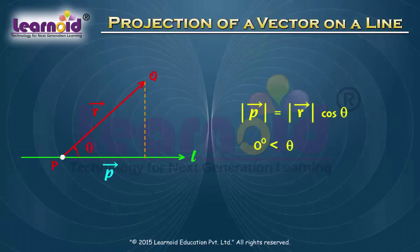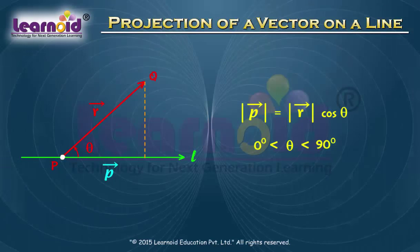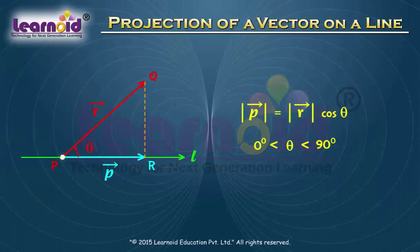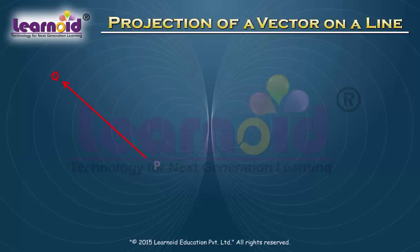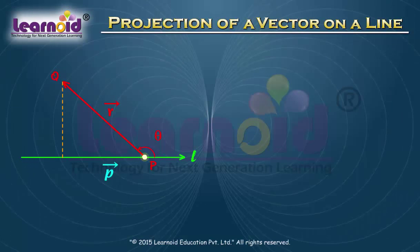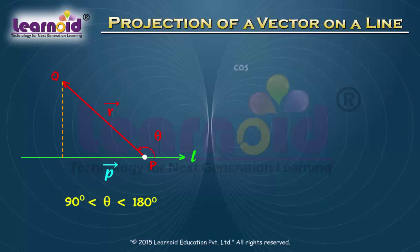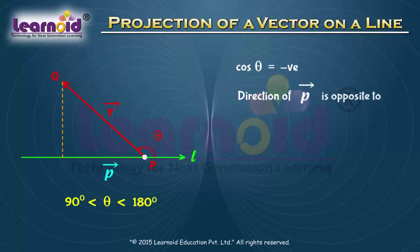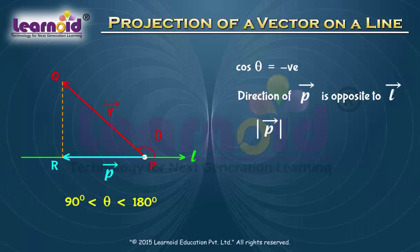For theta greater than 0 and less than 90 degrees, cos theta is positive, so vector P has the same direction as line L. For theta greater than 90 degrees and less than 180 degrees, cos theta is negative, so the direction of vector P is opposite to the direction of line L. The magnitude of P remains the same as the magnitude of R cos theta.